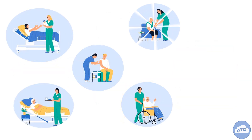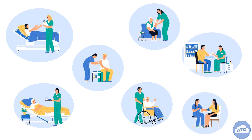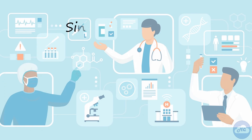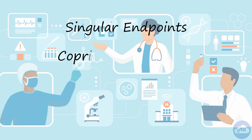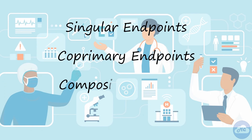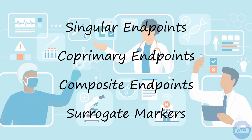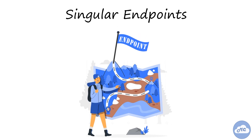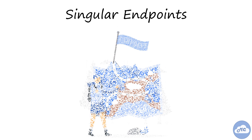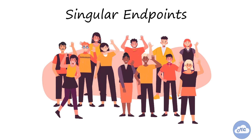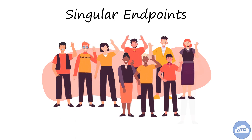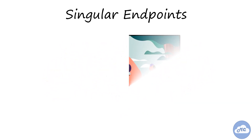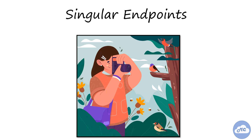A clinical trial may use singular endpoints, co-primary endpoints, composite endpoints, or surrogate markers. A study with a singular endpoint has one primary endpoint. Although having one endpoint is simple and requires fewer participants, singular endpoints are not often used because one endpoint may not capture all of the important effects of an intervention.